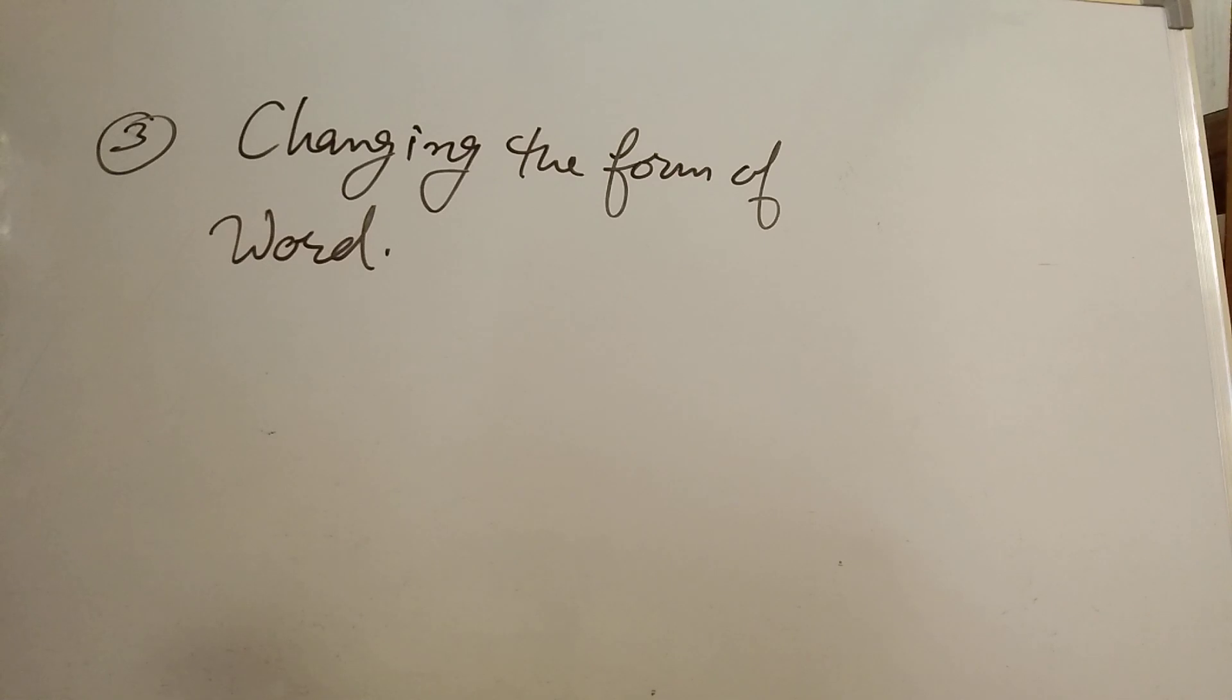Another very useful way to do paraphrasing is by changing the form of the word. The form of the word can be changed from noun to adjective, verb, adverb. But, one thing you have to keep in mind that you should be 100% sure regarding the accurate use of grammar. So, check the grammar rule first while using this technique. Let's see one example.